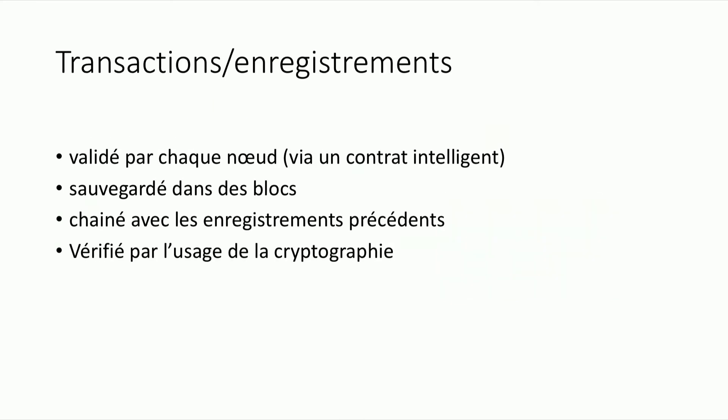So, what happens with transactions on the blockchain? The first thing that happens is it will be saved as the last record on the block and chained to the previous block. So all blocks are dependent on each other, and each transaction is verified by everyone on the network.